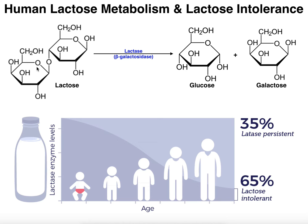Lactose in infants is metabolized by an enzyme in the brush border of the small intestine called lactase. In some sources you may see this written as beta-galactosidase — lactase is a type of beta-galactosidase enzyme. Beta-galactosidase enzymes target disaccharides that have a galactose with a beta linkage, meaning the oxygen at position one on the galactose points upward in the same direction as the CH2OH group. That's why it's called a beta-galactosidase.